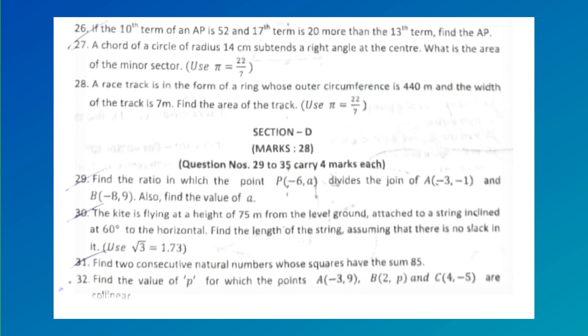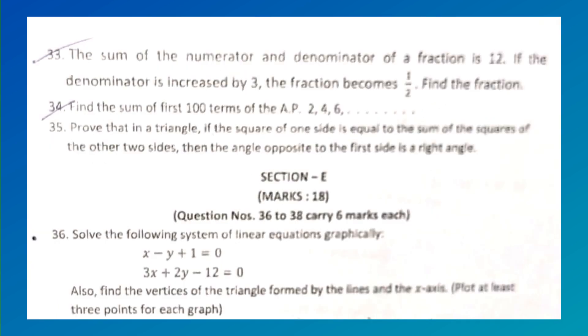Find two consecutive natural numbers whose squares have the sum 85. Find the value of p for which the points A(-3, 9), B(2, p), and C(4, -5) are collinear. The sum of the numerator and denominator of a fraction is 12. If the denominator is increased by 3, the fraction becomes 1/2. Find the fraction.